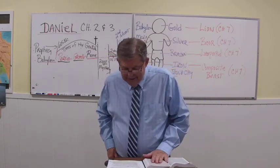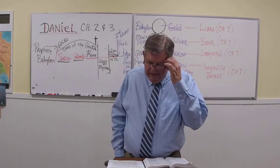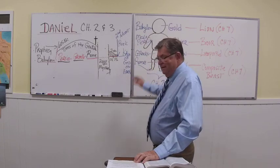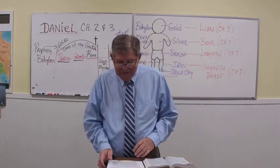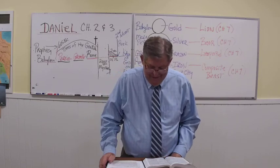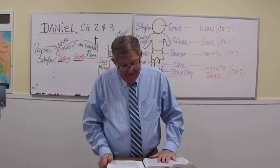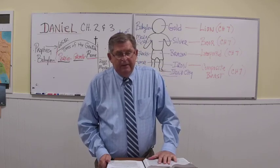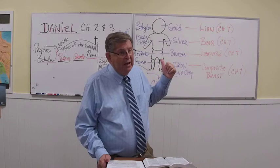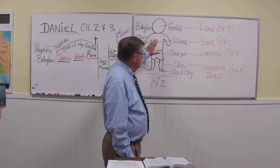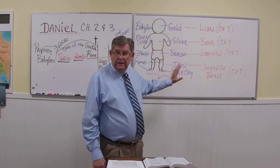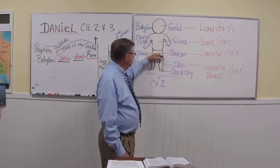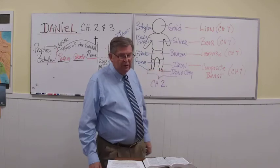As we get into this, you see on the board I have the statue. This is Nebuchadnezzar's dream from chapter 2. He had visions of a statue — an image — and it was gold and silver and bronze and iron and clay. That's what he saw.